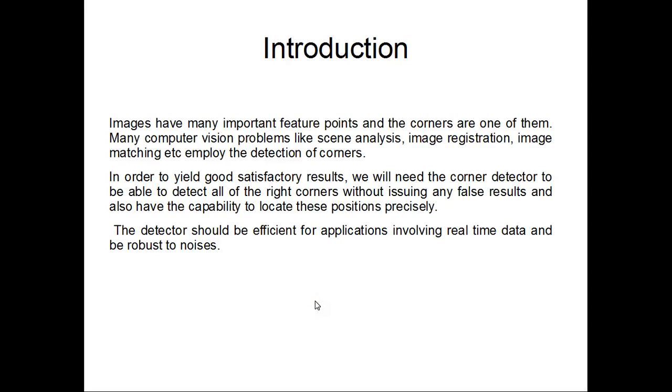Introduction: Images have many important feature points and the corners are one of them. Many computer vision problems like scene analysis, image registration, image matching, etc. employ the detection of corners. In order to yield good satisfactory results, we will need the corner detector to be able to detect all of the right corners without issuing any false results and also have the capability to locate these positions precisely. The detector should be efficient for applications involving real-time data and be robust to noises.